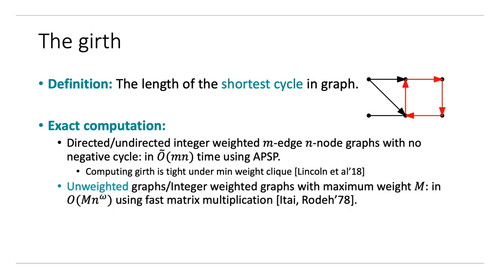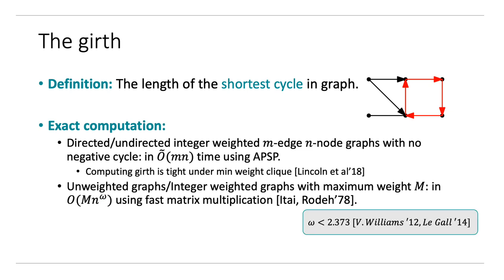If we look at unweighted graphs, or graphs with integer weights with maximum weight M, then we can compute all pairs shortest paths and hence the girth in order M times N to the omega time using fast matrix multiplication, where omega is the exponent of matrix multiplication and is less than 2.373. This improves upon MN only for somewhat dense graphs with small weights, and it is not considered very practical due to the large overhead of fast matrix multiplication techniques.